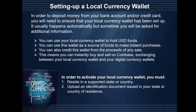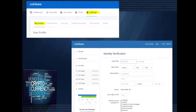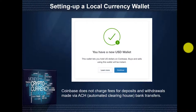To activate your local currency wallet, you must reside in a supported state or country. If you're using a US dollar local currency wallet, you have to live in the US; if you're in Canada, it would be a Canadian dollar wallet. You also need to have uploaded identification documents issued in your state or country of residence — that's where filling out your profile information is important. Once you've completed this, a pop-up will appear saying you have a new USD wallet, that it lets you hold US dollars on Coinbase, that buys and sells will be instant, and that Coinbase does not charge fees for deposits and withdrawals between your USD wallet and your bank account.